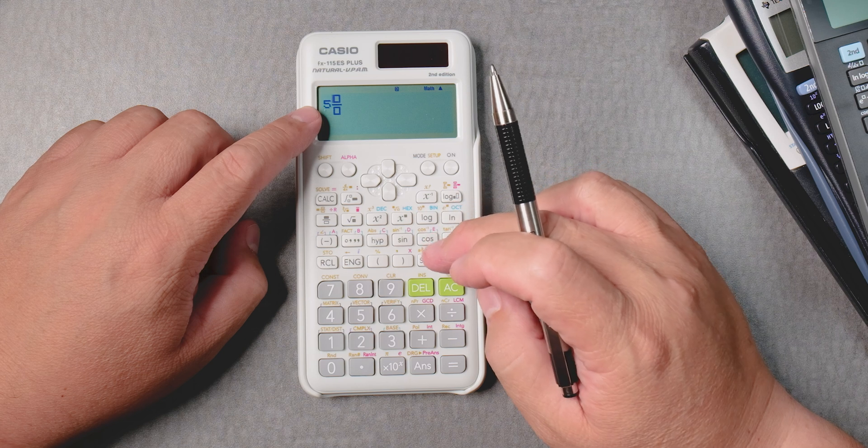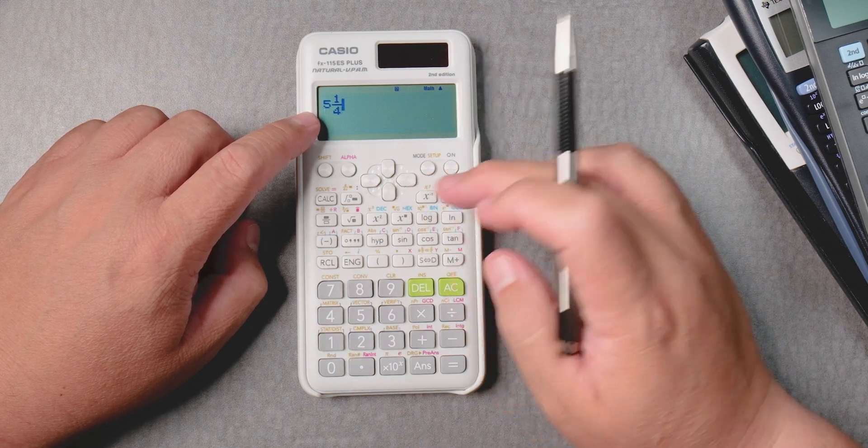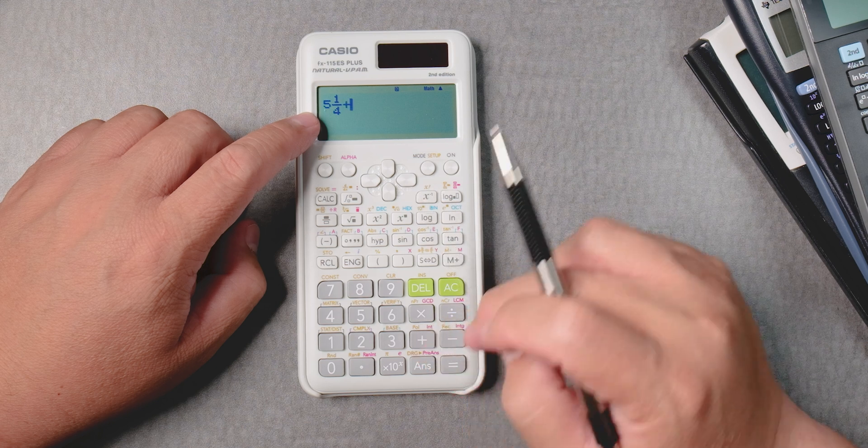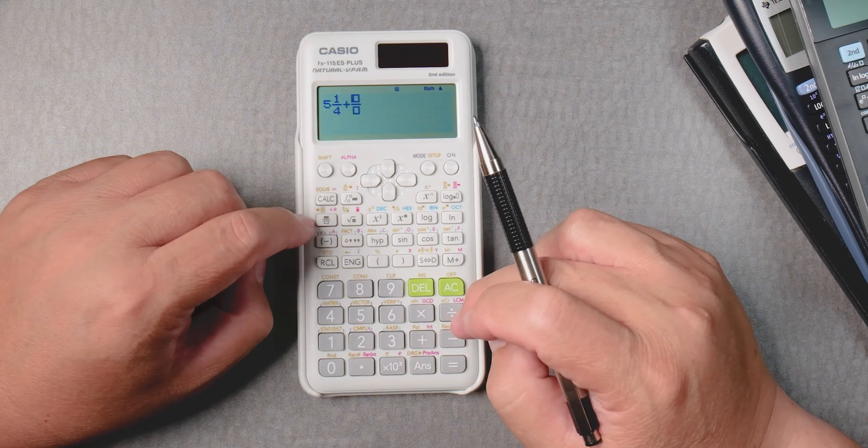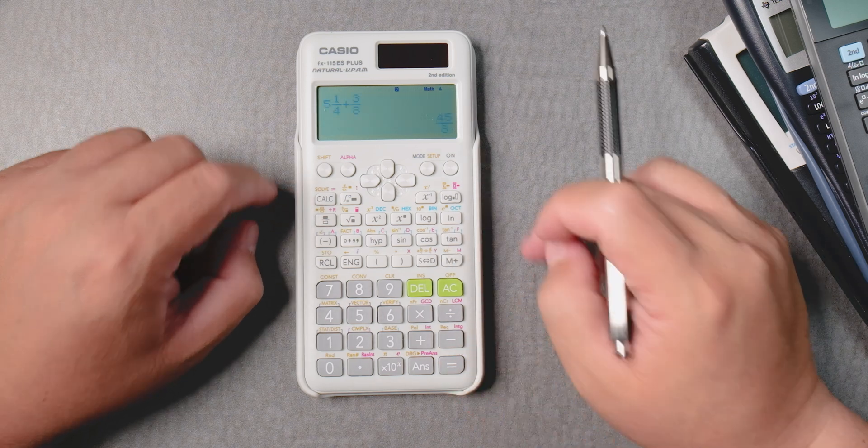5, move over, 1, bring down, 4, bring over, plus, and then fraction button, 3, bring down, 8. Equals. Now you got 45 over 8.